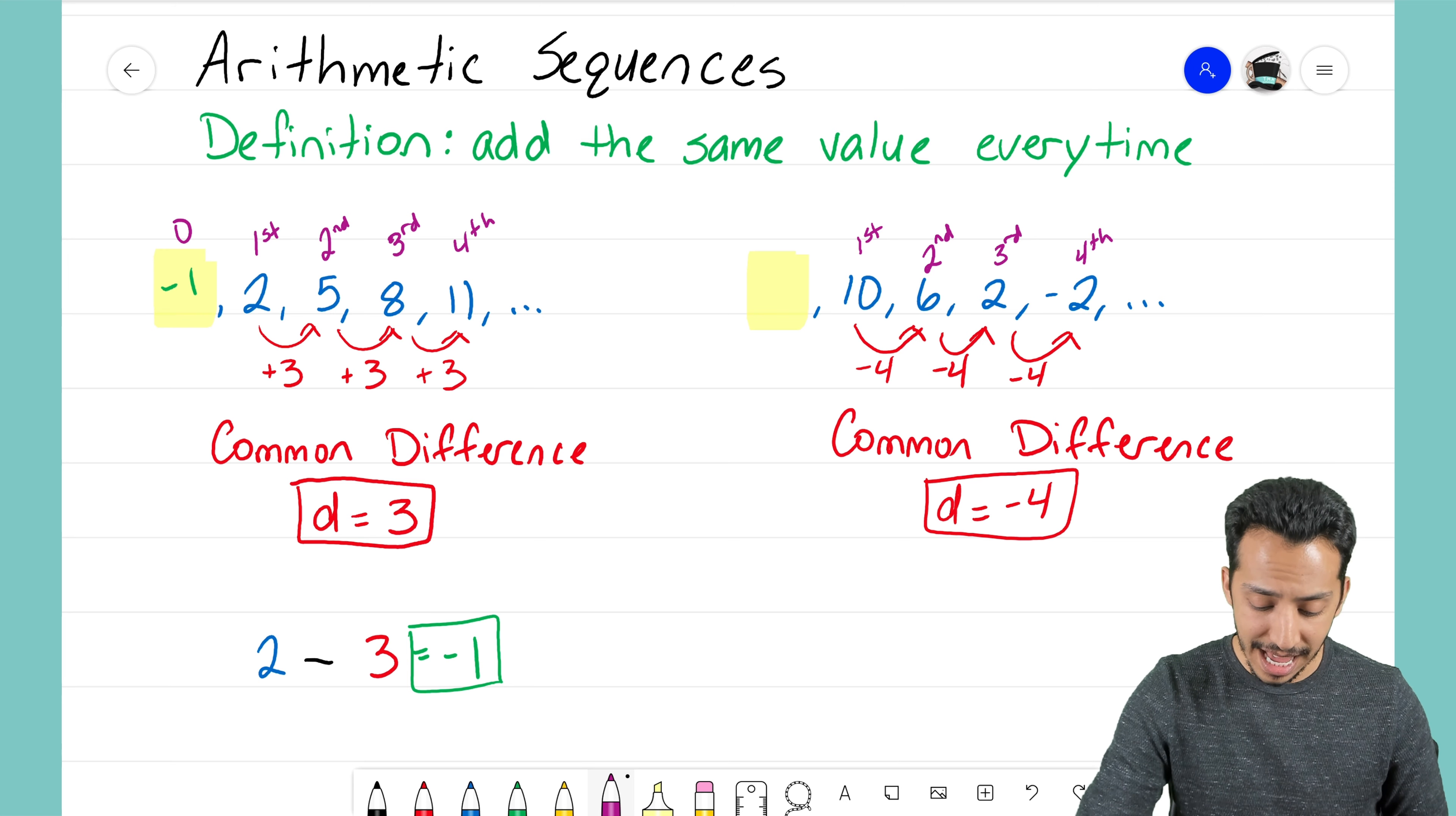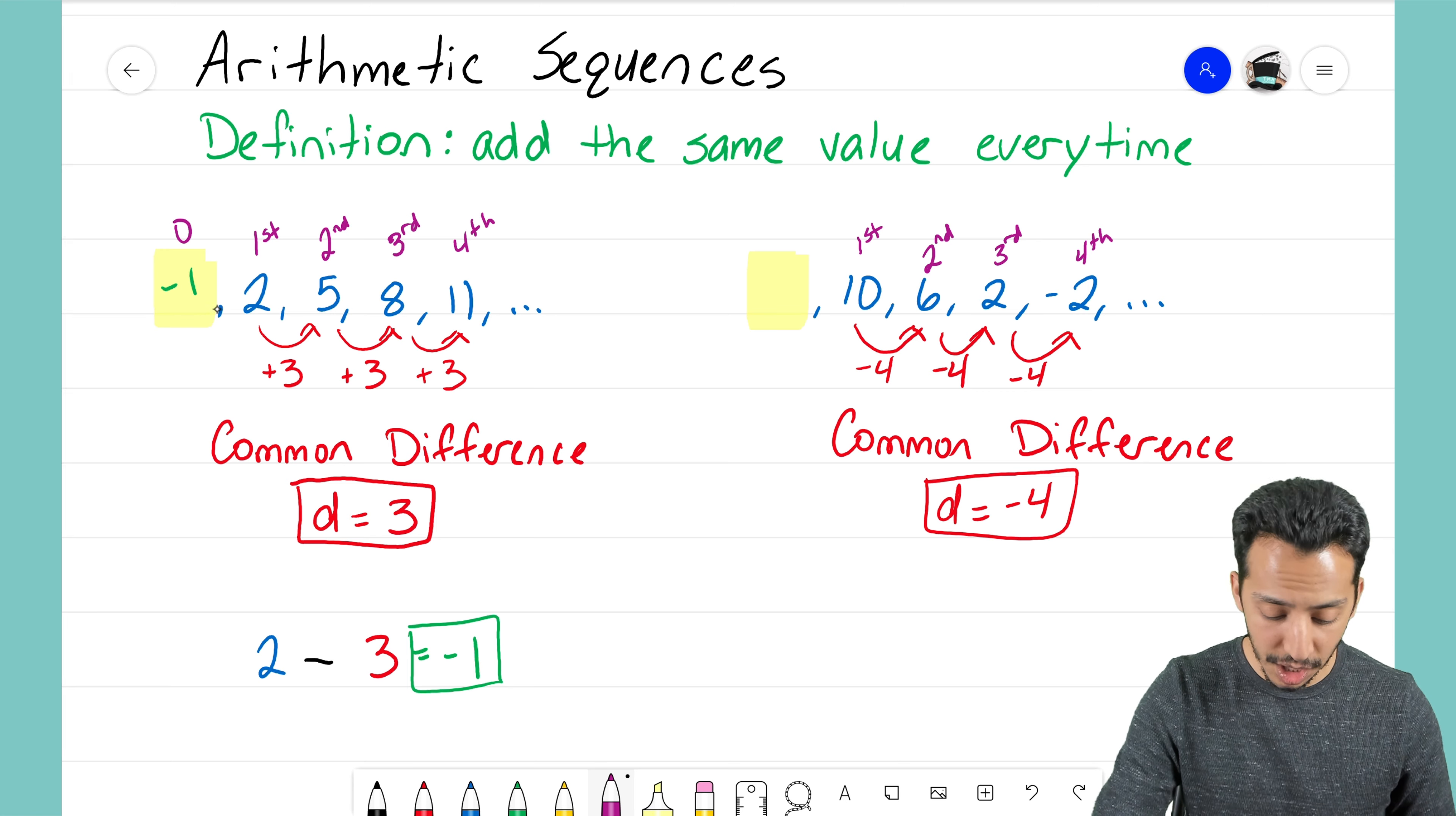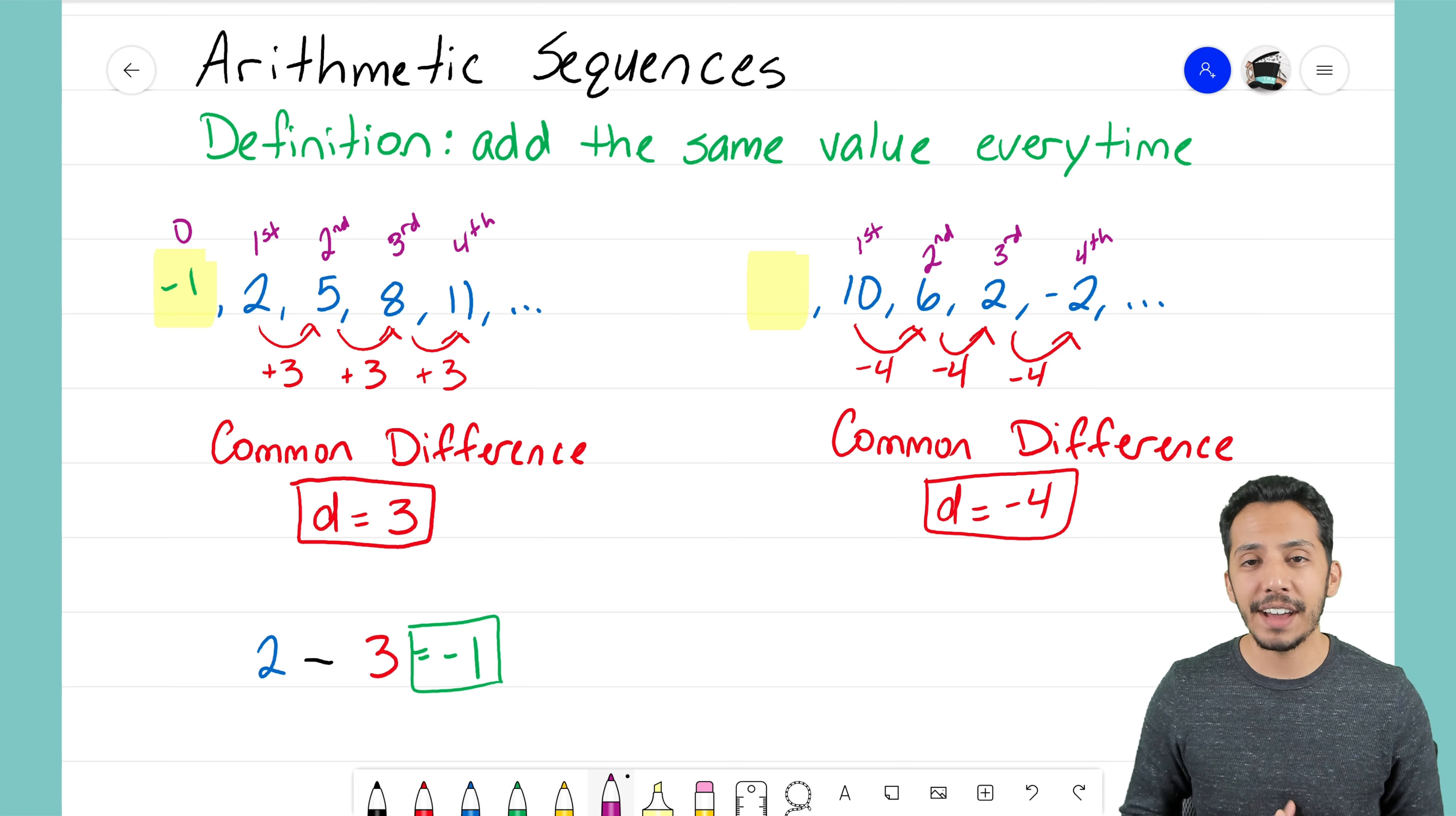And the easy way of finding it is just taking that first term and subtracting your common difference. Because if this was where we start with negative one, we see that by adding three we'll still get our first term of two. It's still going to have that same common difference.